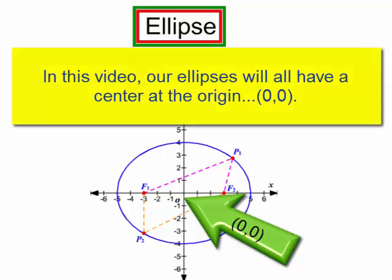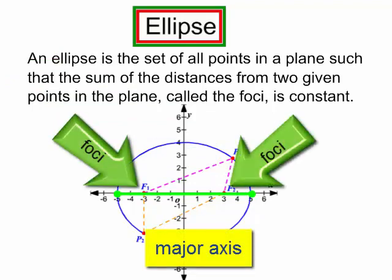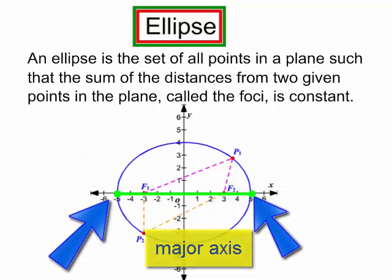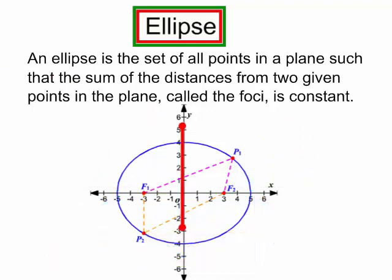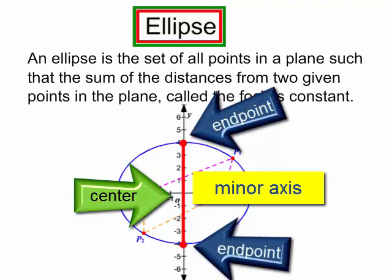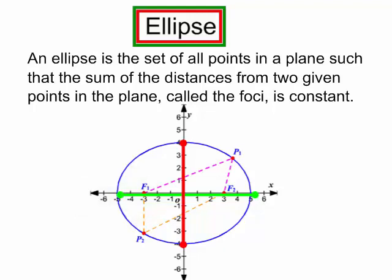Let's talk about the major axis. The major axis of an ellipse is the chord that passes through the foci and has its endpoints on the ellipse. And the minor axis is the chord that contains the center of the ellipse and has its endpoints on the ellipse and is perpendicular to the major axis.